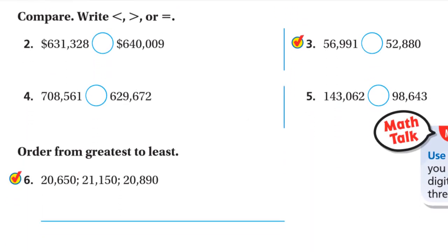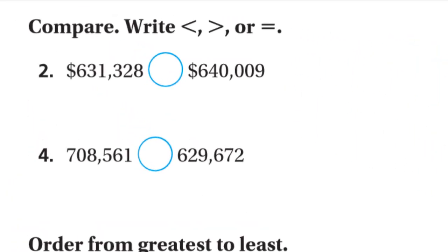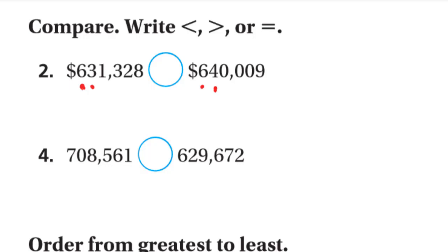Next problems: both numbers have six digits, so start comparing from left to right. Six and six — same. Then three versus four. Three is less than four. For problem three: both numbers have five digits. Start comparing left to right. Five and five — same. Then six versus two. Six is greater than two.